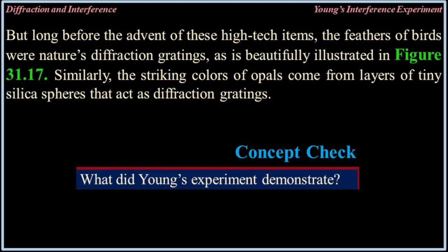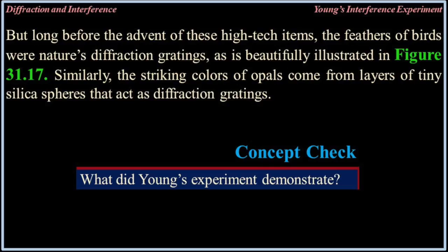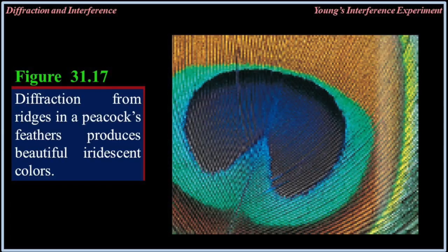Long before the advent of these high-tech items, the feathers of birds were nature's diffraction gratings, as beautifully illustrated in figure 31.17. Similarly, the striking colors of opals come from layers of tiny silica spheres that act as diffraction gratings. Concept check: What did Young's experiment demonstrate? Figure 31.17: Diffraction from ridges in a peacock's feathers produces beautiful iridescent colors.